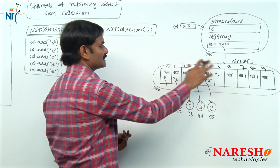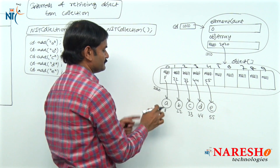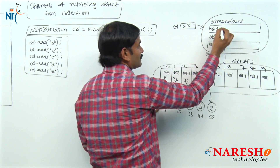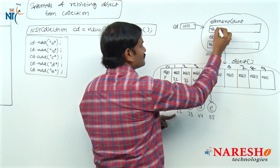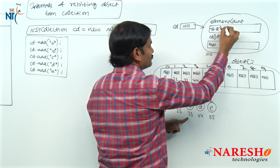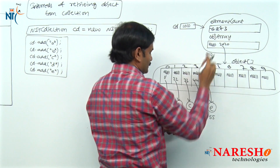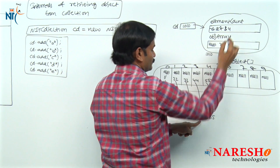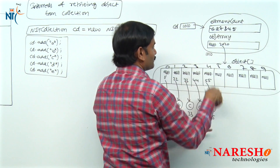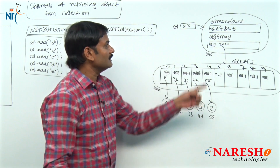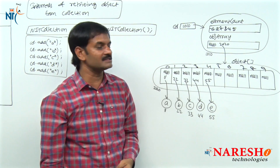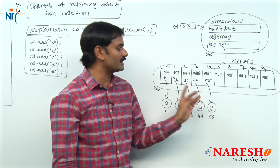Now inside this collection object, I have started storing objects. First object, then size 0 increased to 1. Second object, size increased to 2. Third object, size increased to 3. Fourth object, size increased to 4. Fifth object, size increased to 5. Total number of objects stored is 5. The element count variable is internally used by the size method to know how many objects are stored.